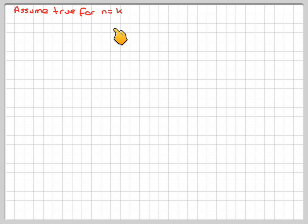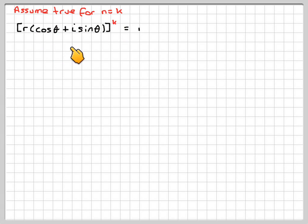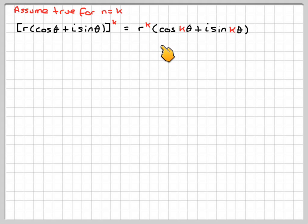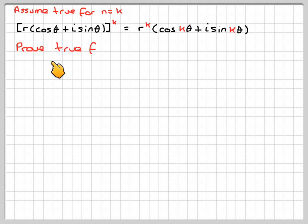Next step: assume true for n equals k. So r(cos θ + i sin θ) to the power of k is equal to r to the k, brackets cos(kθ) + i sin(kθ). Now prove true for n equals k plus 1.